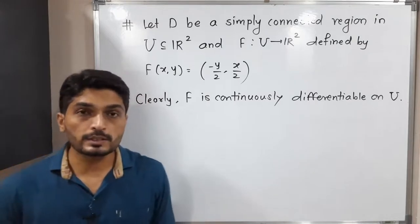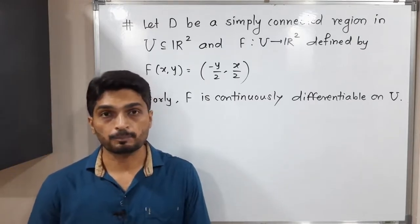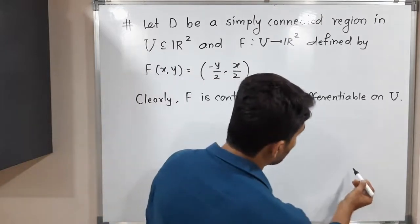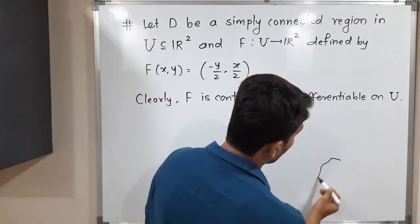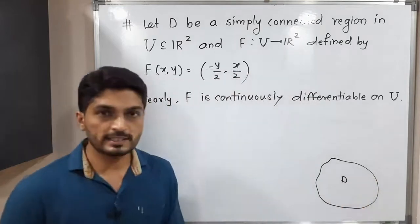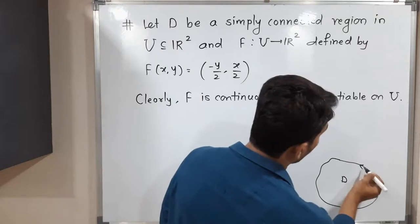Now we are going to discuss how to find area using Green's theorem. We have some set U which is a subset of R², and we have some simply connected region D. Obviously that region D will have some boundary, so we will denote it by ∂D.